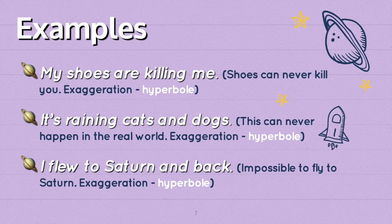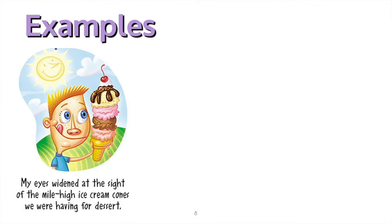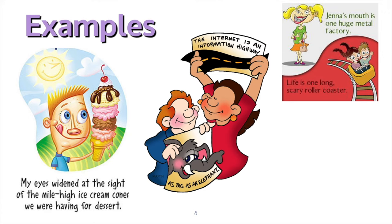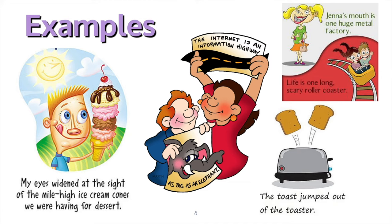'I flew to Saturn and back' — impossible to fly to Saturn, it's an exaggeration. Other examples: 'My eyes widened at the sight of the mile-high ice cream cones we were having for dessert.' Or 'The internet is an information highway as big as an elephant.' 'Gina's mouth is one huge metal factory.' 'Life is one long scary roller coaster.' 'The toast jumped out of the toaster.' These are all examples of hyperbole.